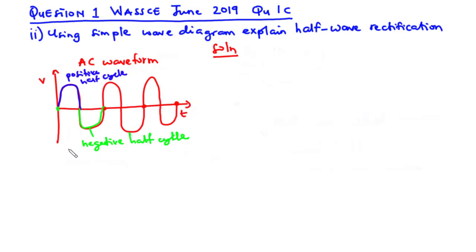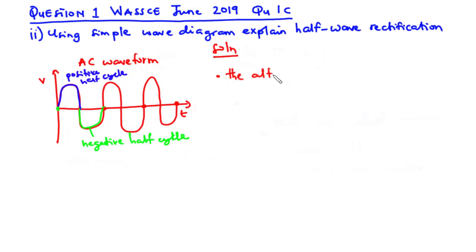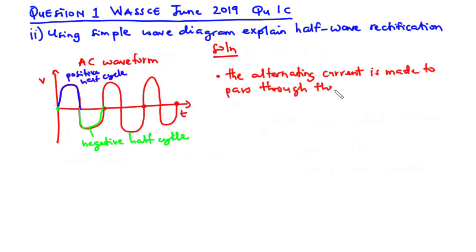So now to perform half wave rectification, the first point is the alternating current or voltage is made to pass through a diode. A diode is a device that allows current to flow in only one direction. So the alternating current is made to pass through the diode.